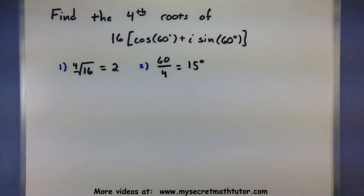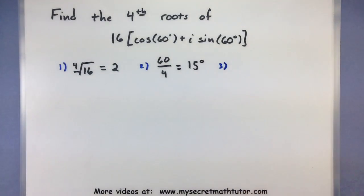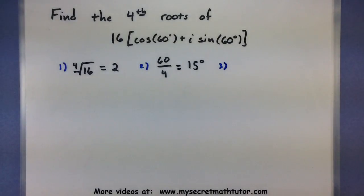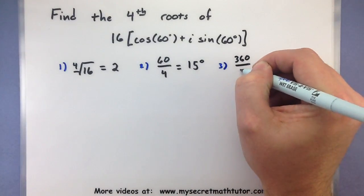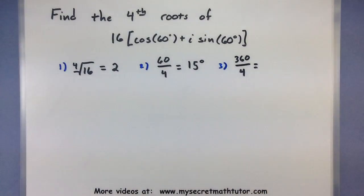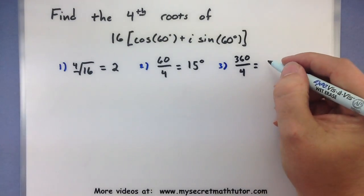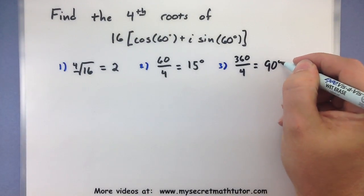One more thing we need to find is we need to take the entire 360 degrees for our circle and divide it by the index of the root. So, 360 divided by 4. If you think of a circle chopped up into 4, you'll get 90 degrees.